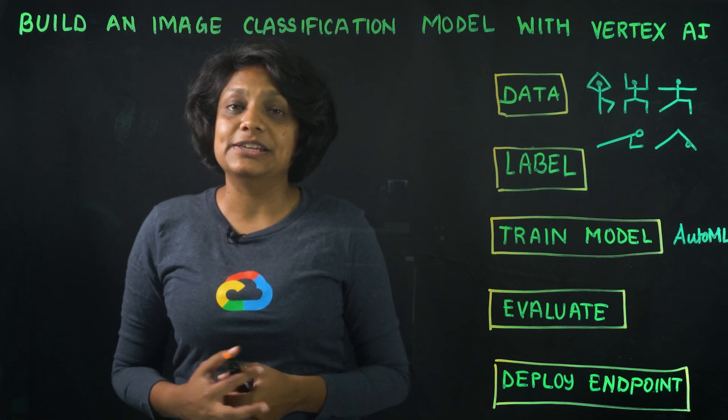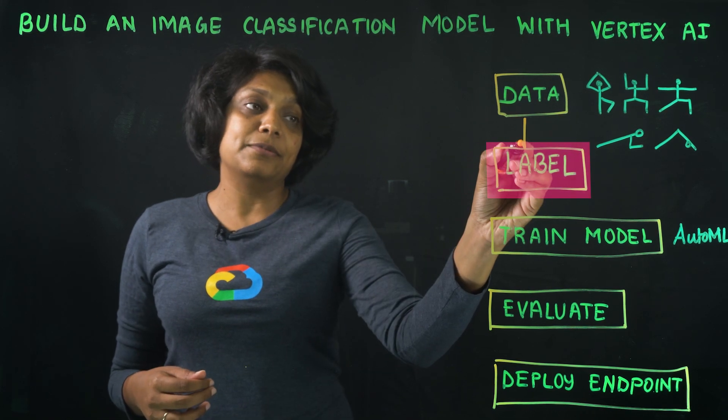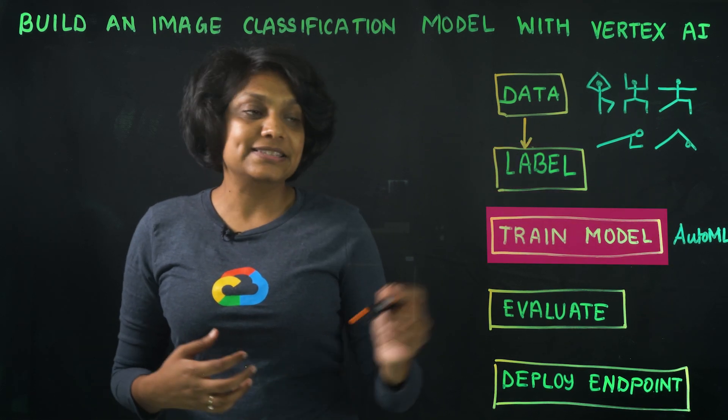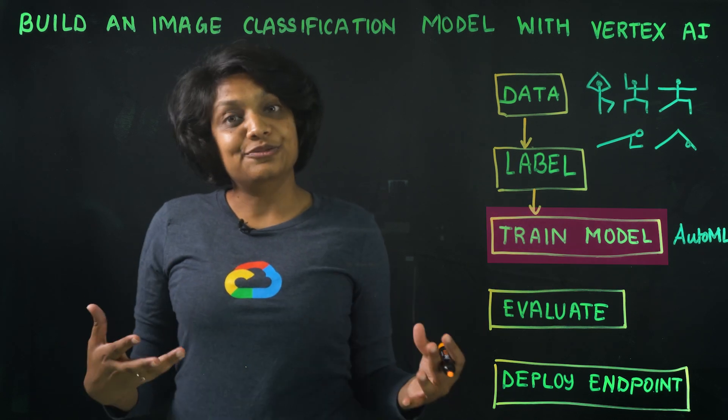Our first step would be to ingest these images using the managed datasets and then label them appropriately. Then comes training the model, and since this is an image classification problem, it's a good fit for AutoML.